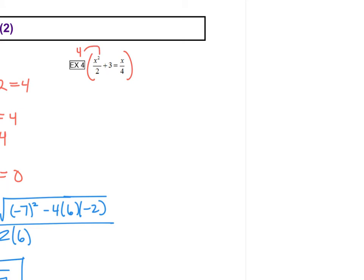4 times x squared is 4x squared divided by 2 is 2x squared. 4 times 3 is 12, so plus 12 equals 4 times x is 4x divided by 4 is just x.